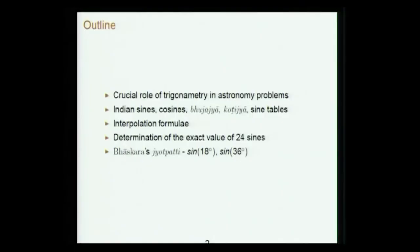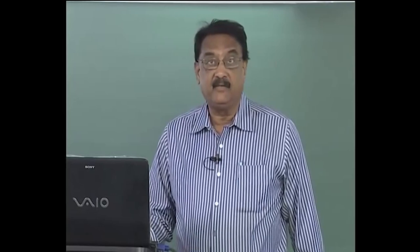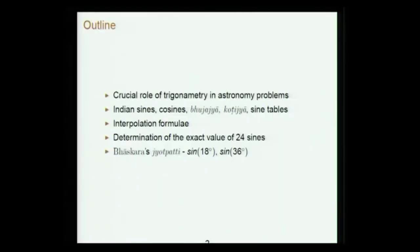This is a first lecture on trigonometry and spherical trigonometry. The outline covers the crucial role of trigonometry in astronomy problems, then Indian sines and cosines — that is Bhujajya and Kotijya — and sine tables. Some interpolation formulae are needed for finding the sine and cosine at an arbitrary angle, then determination of the exact values of the 24 R-sines and Bhaskara Jyotpatti. Some aspects of Bhaskara Jyotpatti will be discussed in this lecture and the rest later.